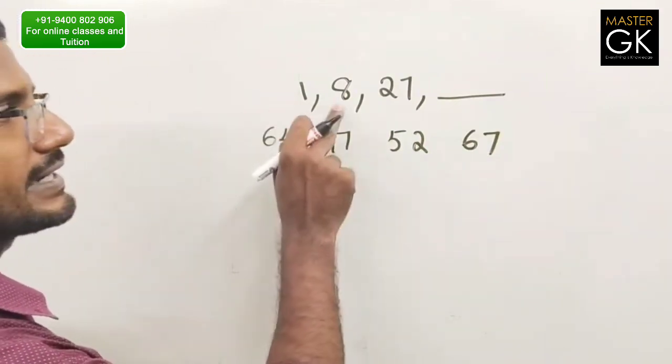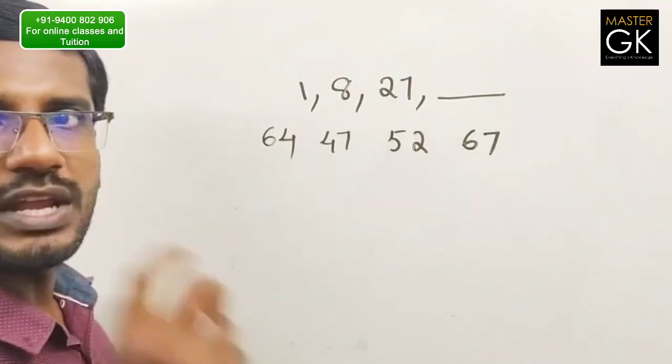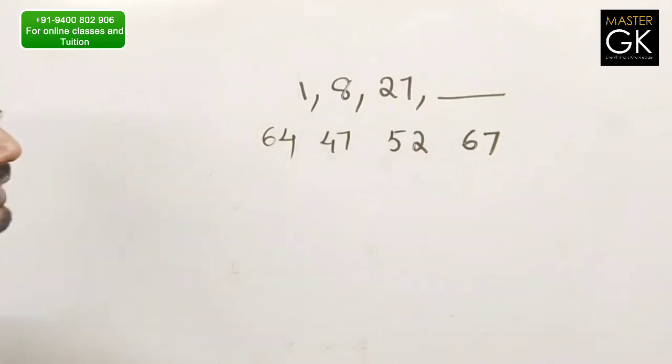1, 8, 27 is the pattern. How do you do this? Let's see.